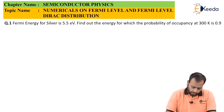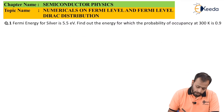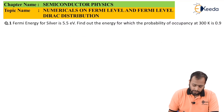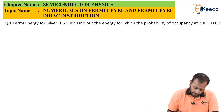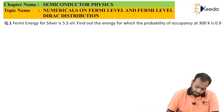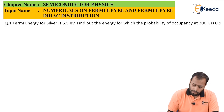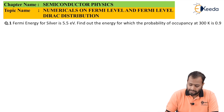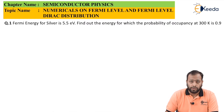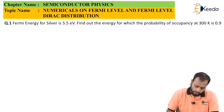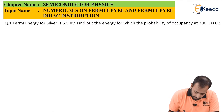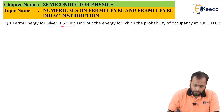The first question says: Fermi energy for silver is 5.5 electron volts. Find out the energy for which the probability of occupancy at 300 Kelvin is 0.9. Let's first note down the given data. The Fermi energy is given as 5.5 electron volts.